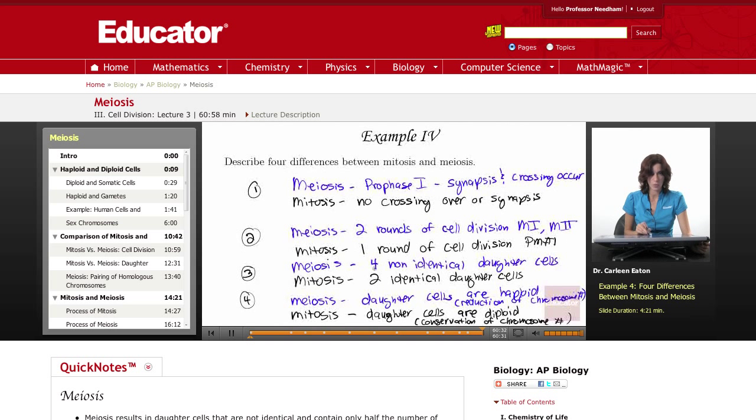In meiosis, the result is four non-identical daughter cells. Mitosis, two identical daughter cells. In meiosis, a reduction of chromosome numbers occurs, so a diploid cell, the daughter cells are haploid. Mitosis, the daughter cells are diploid if you started with a diploid cell. In other words, conservation of chromosome number. This concludes the lecture on meiosis here on educator.com. Thank you for visiting.